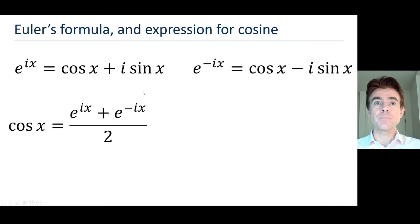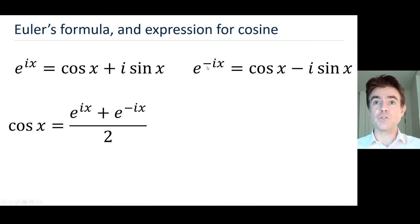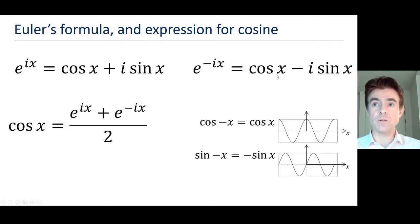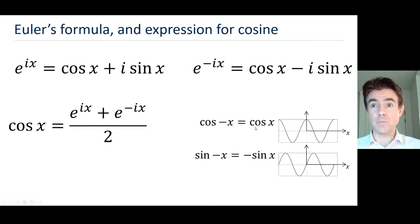First of all, we can rewrite the left-hand expression for the case where the argument of the complex exponential is negative. So here we have e to the minus ix equal to cos x — notice we haven't put cos minus x, just cos x. That's due to the fact that cos x is an even function, which means that cos minus x equals cos of plus x. That's the expression for an even function: f of minus x equals f of x.